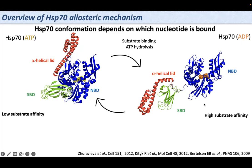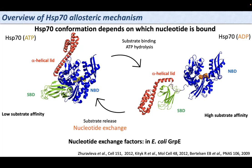To complete the cycle, we have substrate release and nucleotide exchange. For these proteins to exchange the nucleotide, they need nucleotide exchange factors. In E. coli, this is called GrpE.